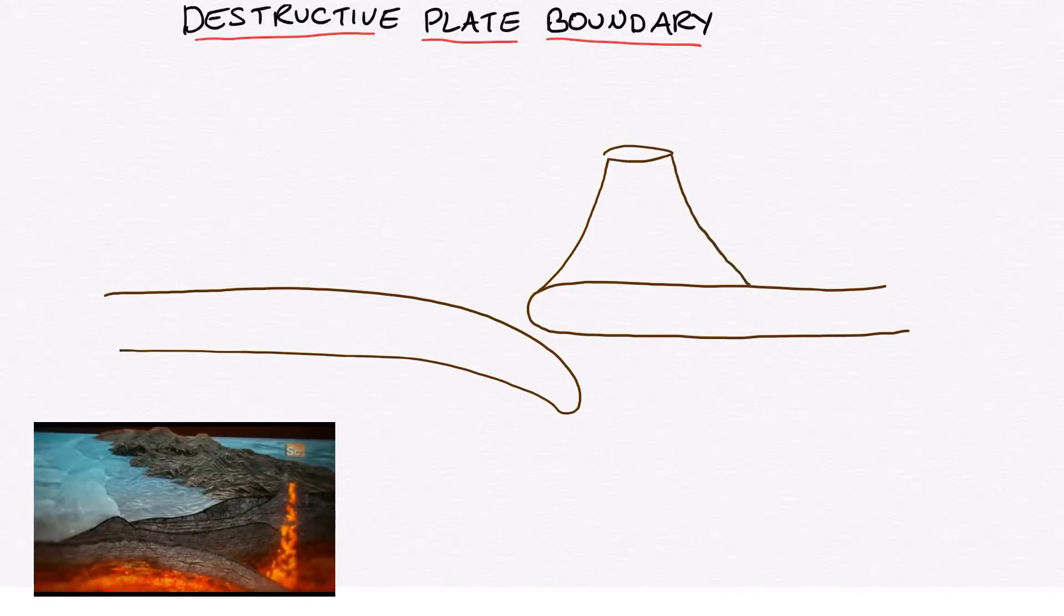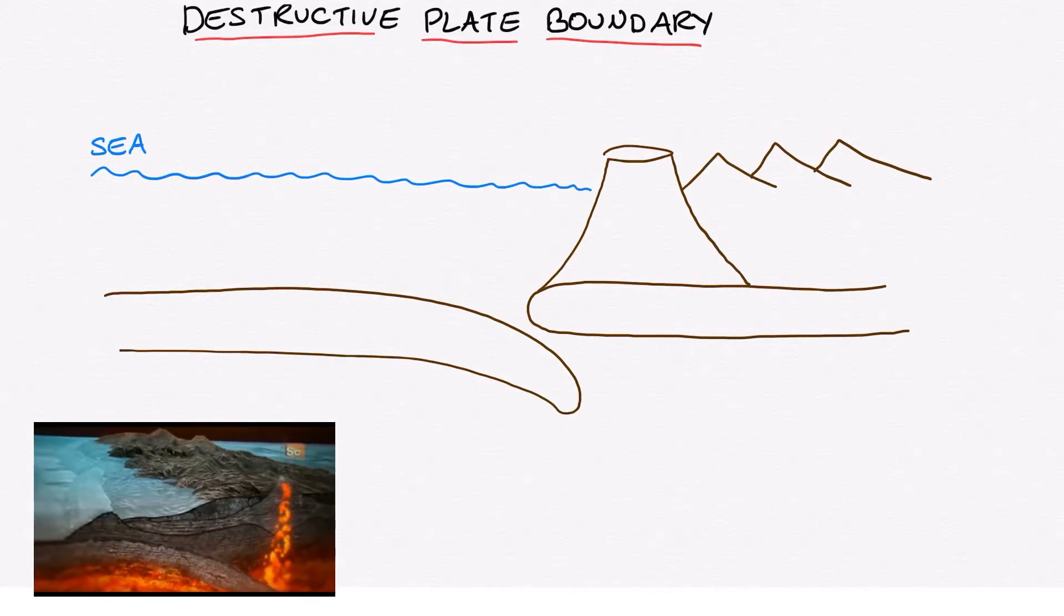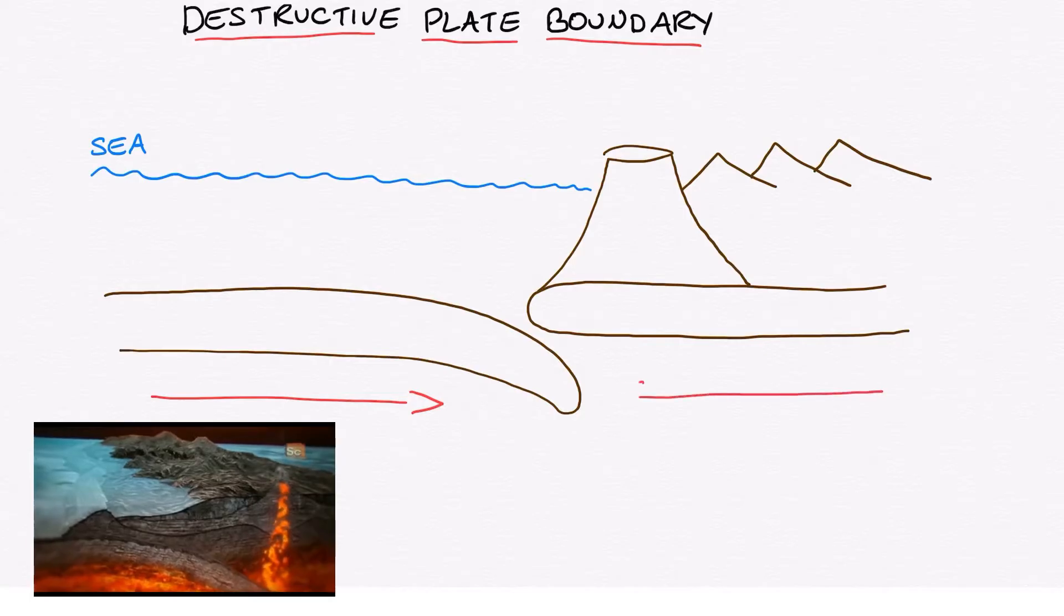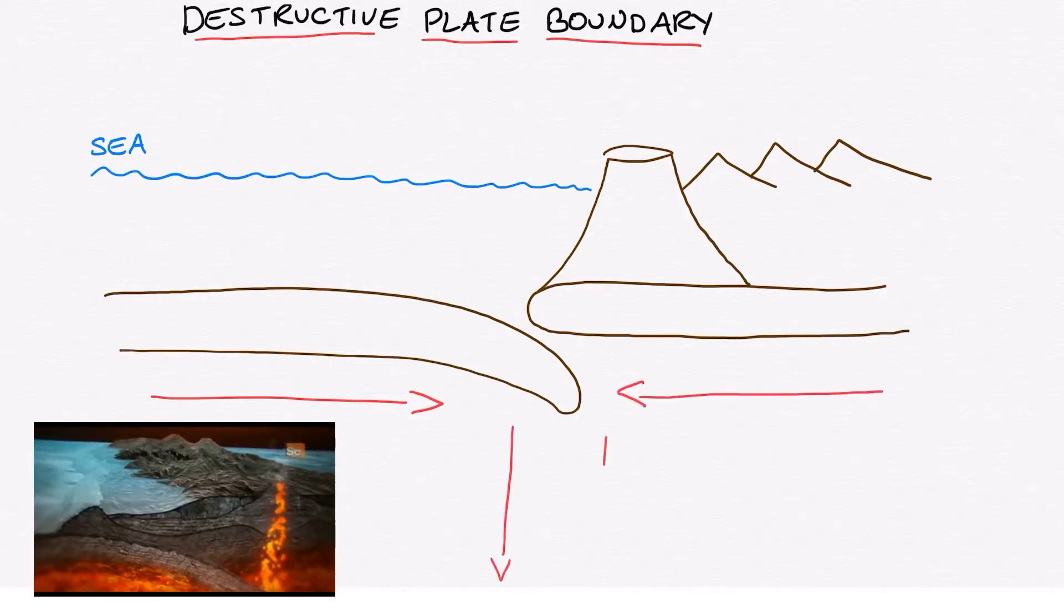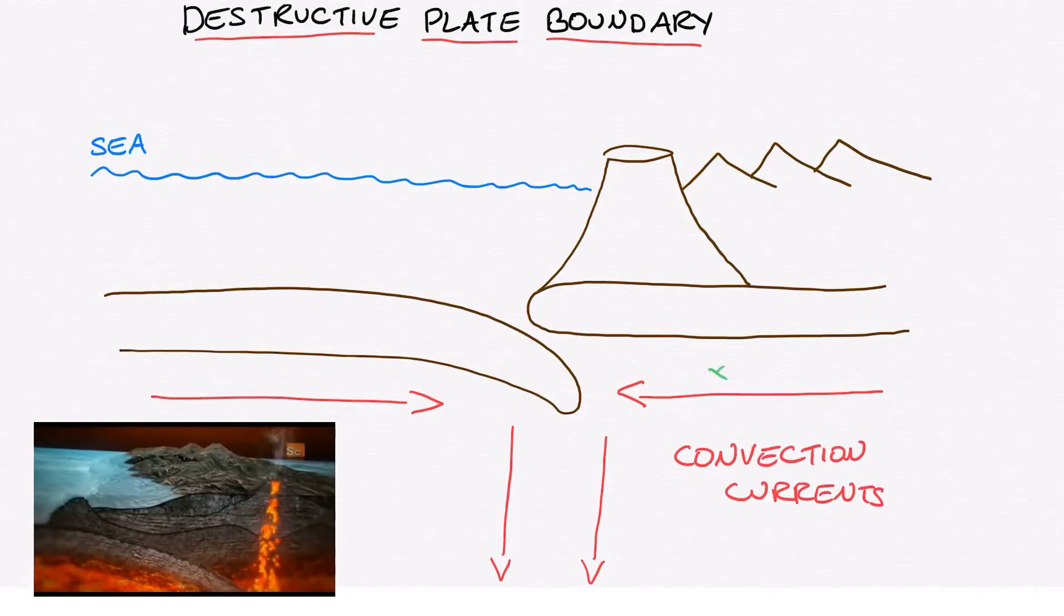Now in this type of plate boundary we have two different varieties of plates. We have an oceanic plate which is underneath the ocean and we have a continental plate as well. And what happens is that the oceanic plate is denser than the continental plate and therefore the oceanic plate becomes subducted underneath the continental plate.